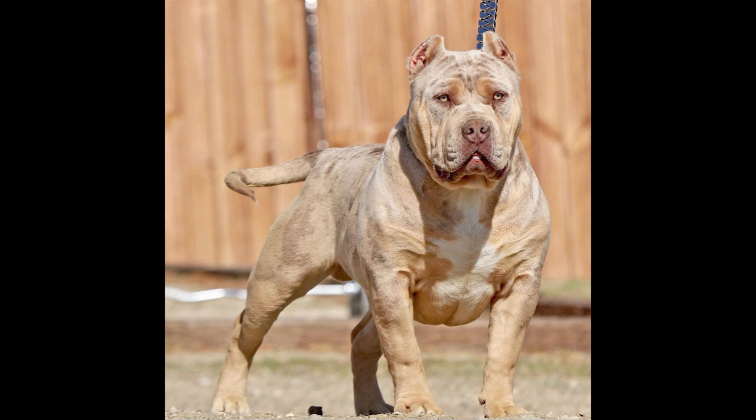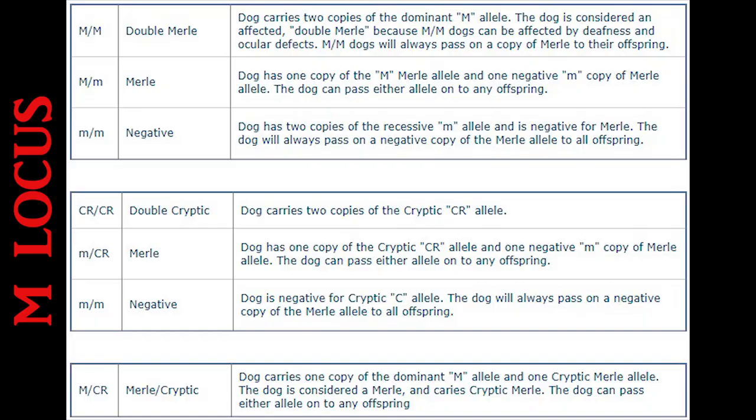The M locus is responsible for the merle pattern. The merle gene creates mottled patches of skin in a solid or piebald coat and also creates blue or mismatched eye colors; it also affects skin pigment. Dogs that are double merle — meaning they have two copies of the M allele — are predominantly white and may be prone to several health issues such as hearing and vision deficiencies. The M locus does not have a recessive allele. There's only one allele associated with it: dominant capital M. There is also what's called a cryptic merle — a dog that does not appear to be merle but still contains the capital M allele. When a merle dog is bred to a cryptic merle, they can produce double merles that are at risk for those health issues.